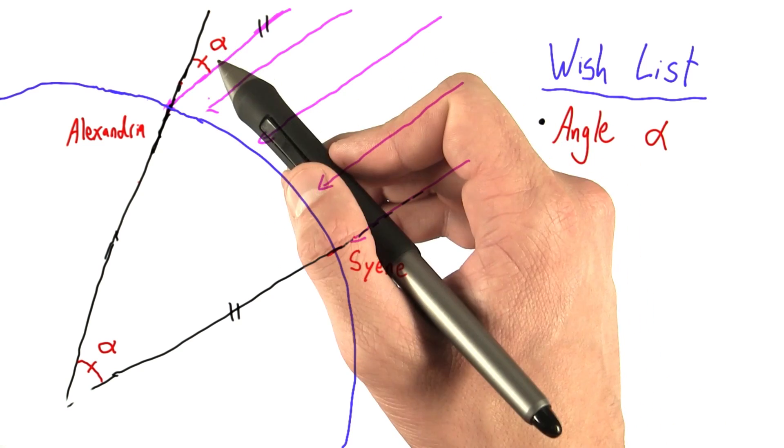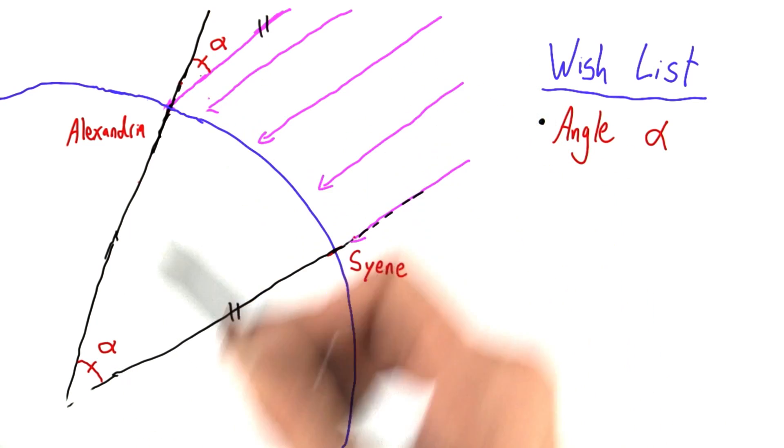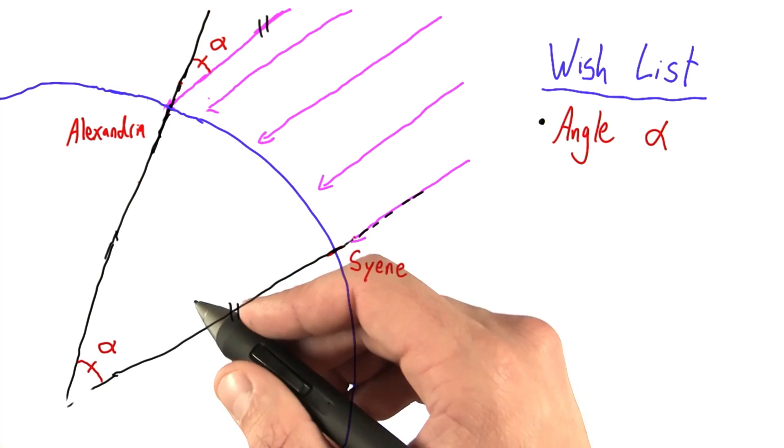Alexandria, where they strike at an angle alpha. And this angle alpha is the same as this angle alpha. And we're hoping we can use that to calculate the circumference.